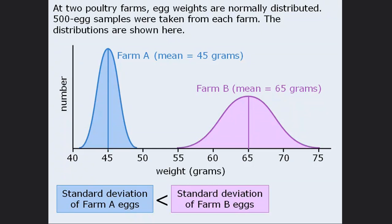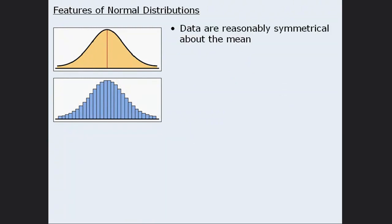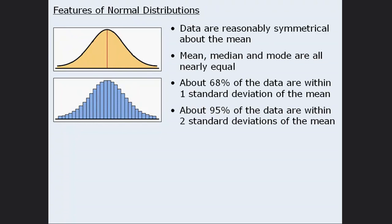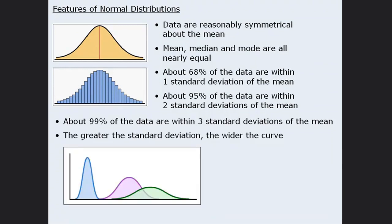That concludes this lesson. Here's everything you need to know about normal distributions on test day: the data values are reasonably symmetrical about the mean; the mean, median, and mode are all nearly equal; about 68% of the data are within one standard deviation of the mean; about 95% are within two standard deviations; about 99% are within three standard deviations; and the greater the standard deviation, the wider the bell curve.